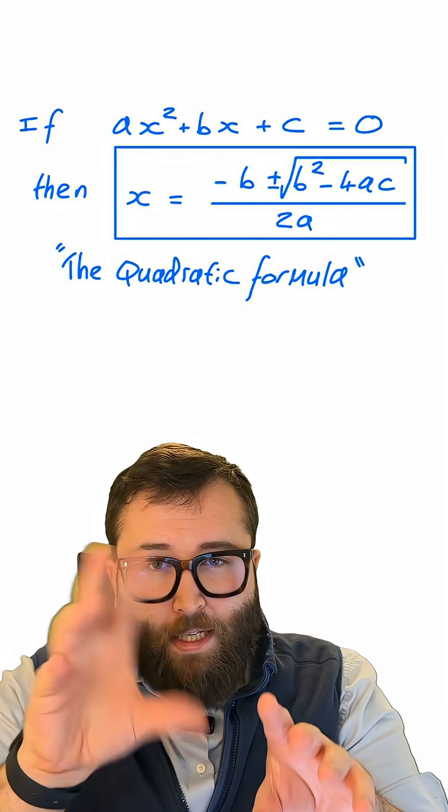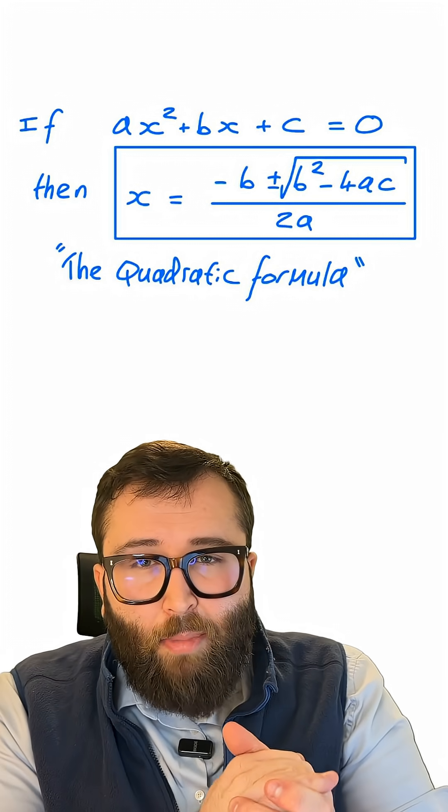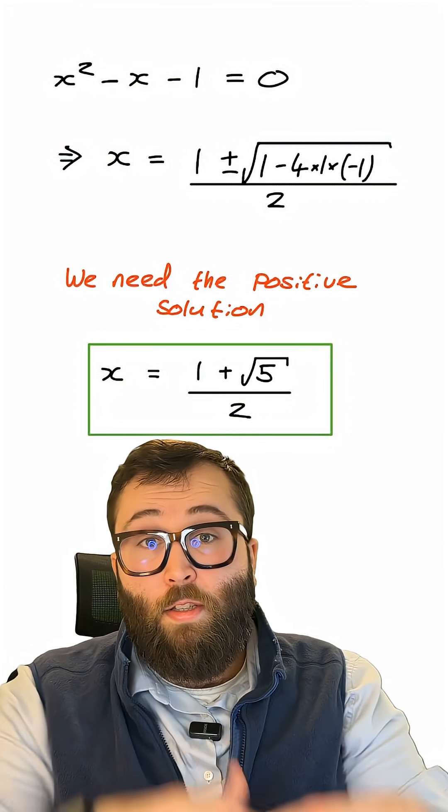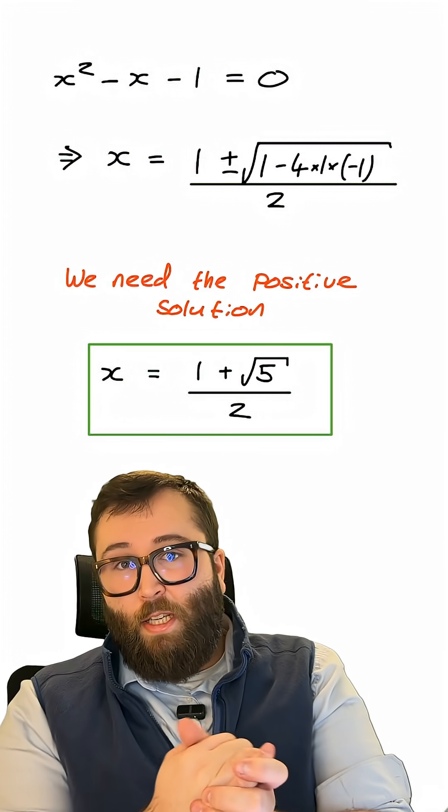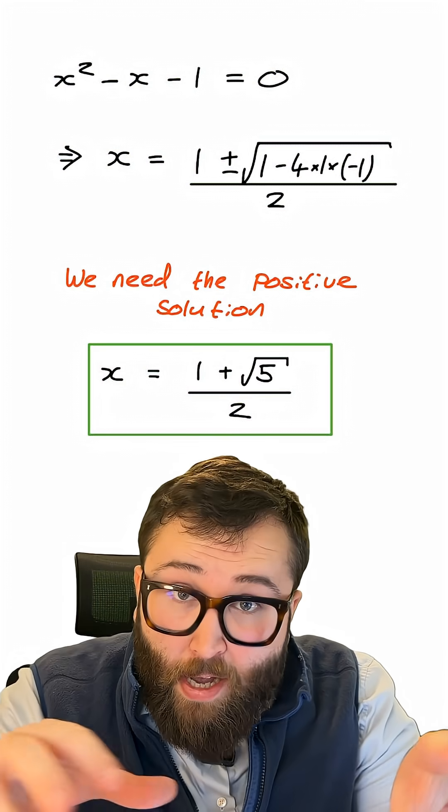...will be in terms of these coefficients, a, b, and c, that are just the numbers that multiply the x squared, the x, and then the constant term is the c. So when we do this for our quadratic, you see we end up with the following solution. x is equal to 1 plus the square root of 5 divided by 2.